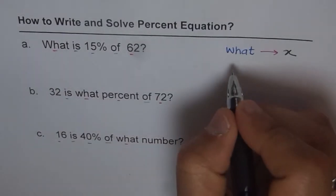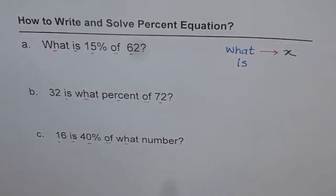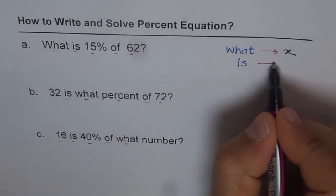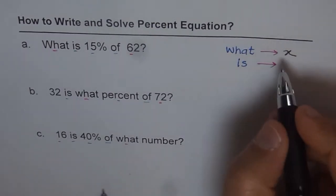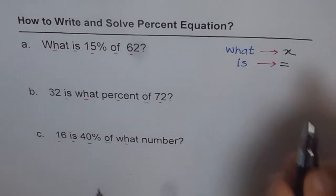The next one is 'what is'. 'Is' in mathematics is always translated as equal to. So we will write that as equal to. What is? Is is equal to.